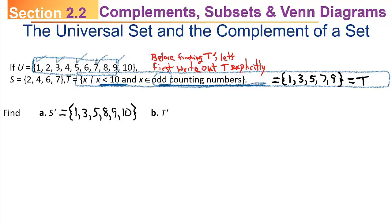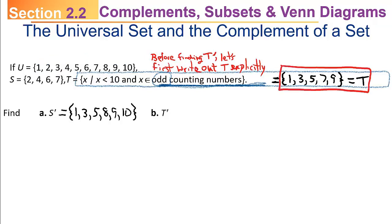Now we've only found T. We want T complement, so don't forget you've only found T. T complement is found by going back to the universal set and crossing out every element of T: 1, 3, 5, 7, and 9. You're left with 2, 4, 6, 8, and 10. So T complement is the set containing 2, 4, 6, 8, and 10.